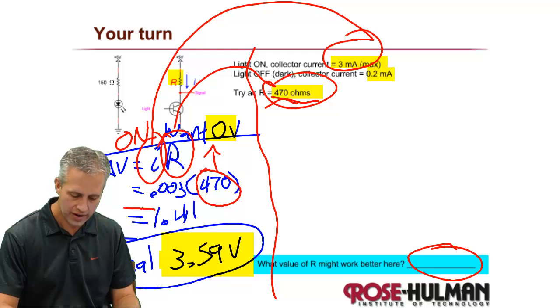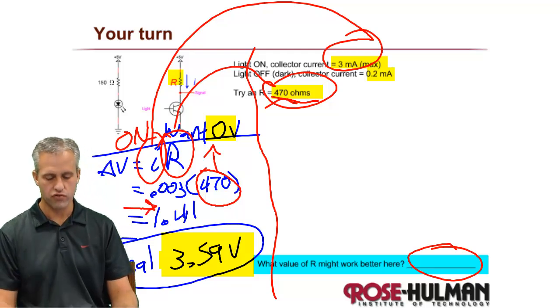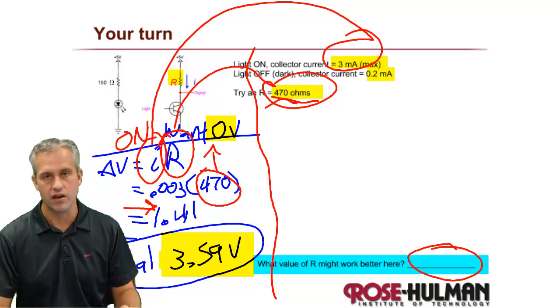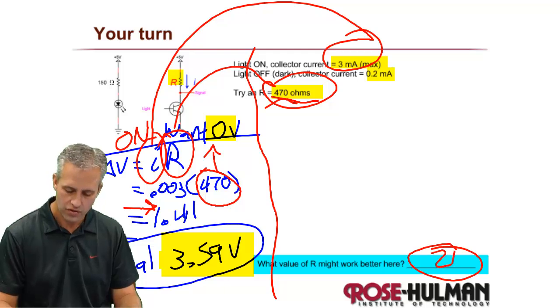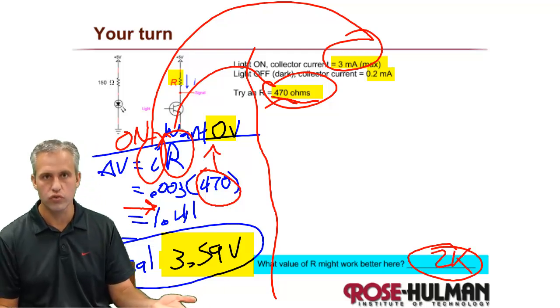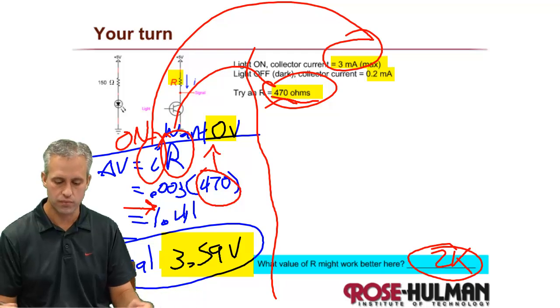In fact, this drop right here, I would rather this drop was three times that number. So at three times that number, we would start to really have something. Heck, at four times that number we'd be better off. So I can tell you that if we had something more like a 2k, that would fix the problem.